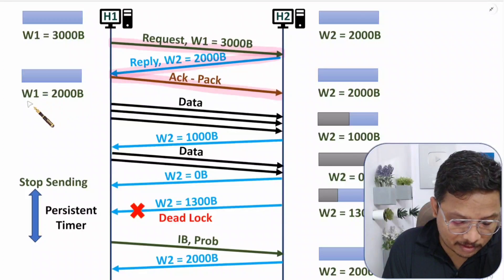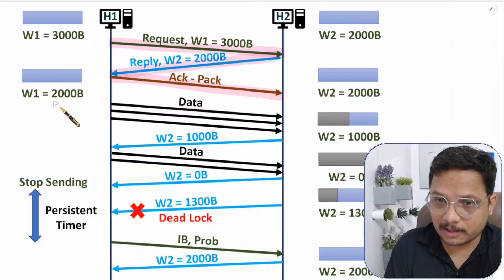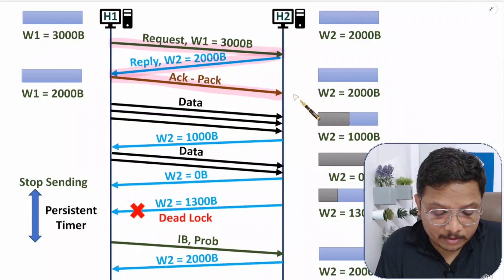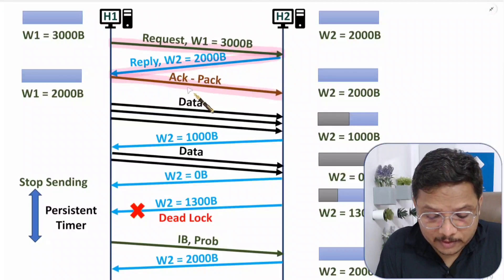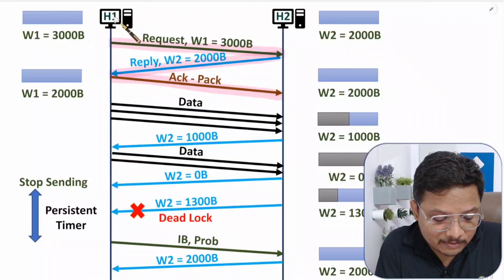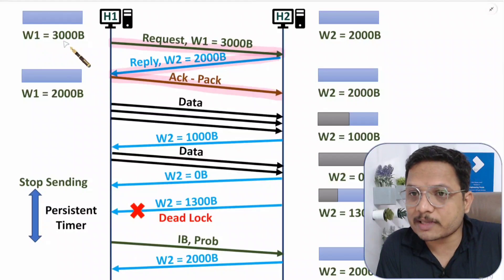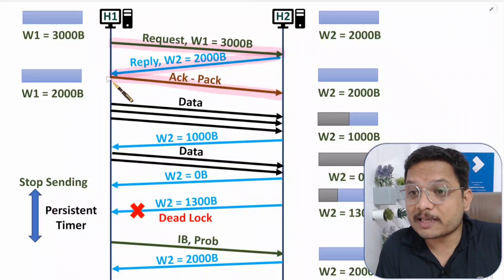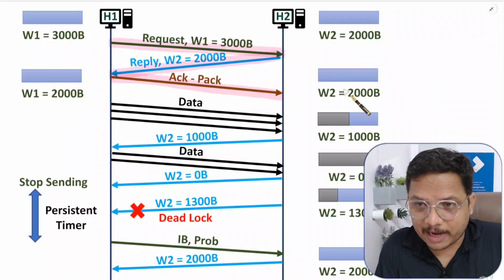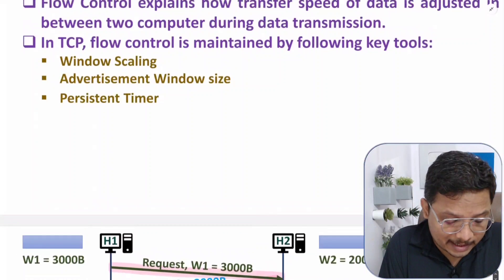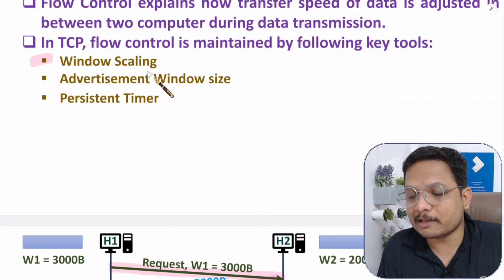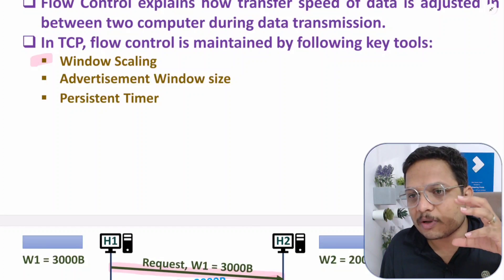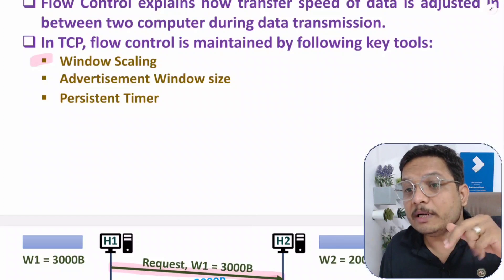So now both H1 and H2 have a window size of 2000. This is window scaling — initially H1 had capability up to 3000 bytes and H2 had 2000, but after connection establishment they scale their window size to 2000 bytes. That is the first key aspect of TCP flow control: they communicate their window sizes and agree that only that size of data should be transferred.